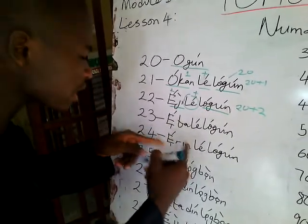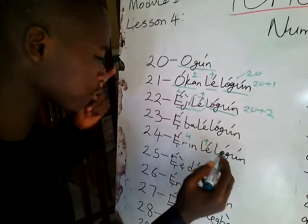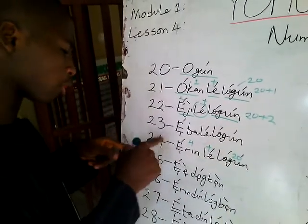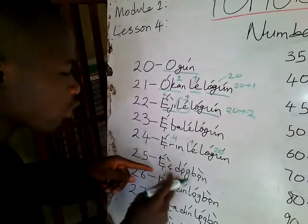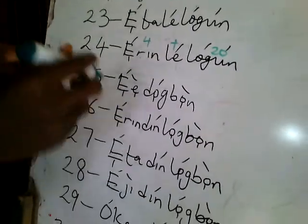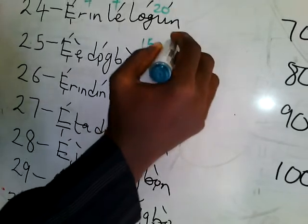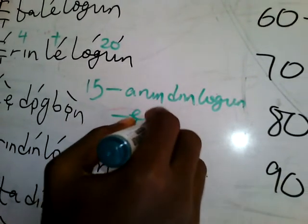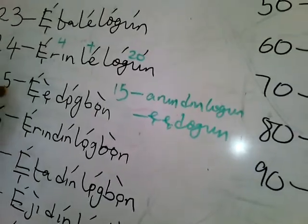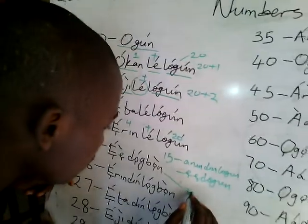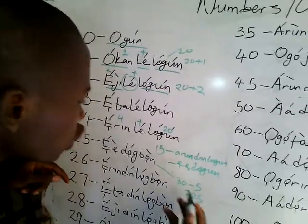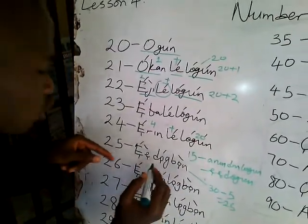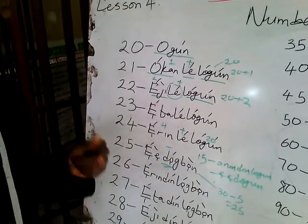For 24, Erin from our previous class is 4, Le is plus, and Ogun is 20, so we have Erin Lelogun — that is 20 plus 4 to give us 24. Now moving on to 25: we have 25 as Edogun. Just like 15, where we have Arun De Logun, we shorten Arun to E, giving us Edogun. That is 30 minus 5 — the 'do' here means negative, so we have 30 minus 5 to give us 25.